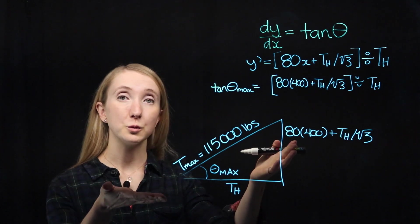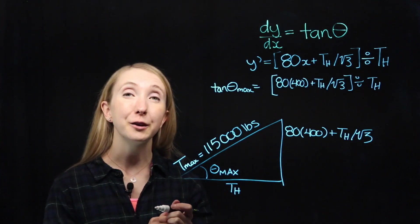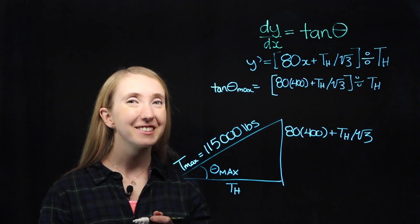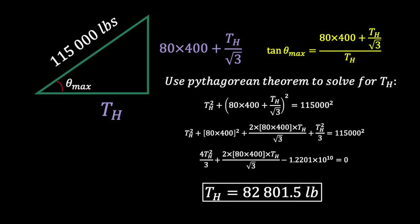Now, using this beautiful right triangle, we can call upon our good friend Pythagoras. We used the Pythagorean theorem to solve for TH. Even pretty simple scientific calculators often come with quadratic solver functions, which will help you crush this out pretty quickly. Or you could always kick it old school and dust off your quadratic formula. But any way you slice it, you'll find out that the horizontal component of our tension is around 82,801.5 pounds.